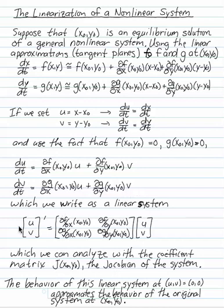But that's a linear system. The derivative of the vector u, v is this matrix of first order partials times u, v. This matrix of first order partials is called the Jacobian of the system at x naught, y naught.